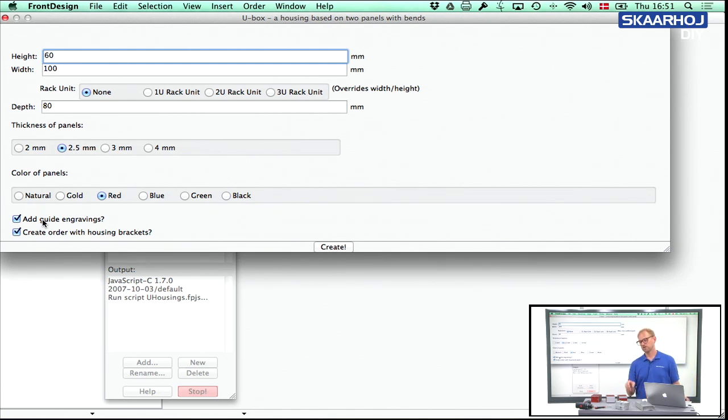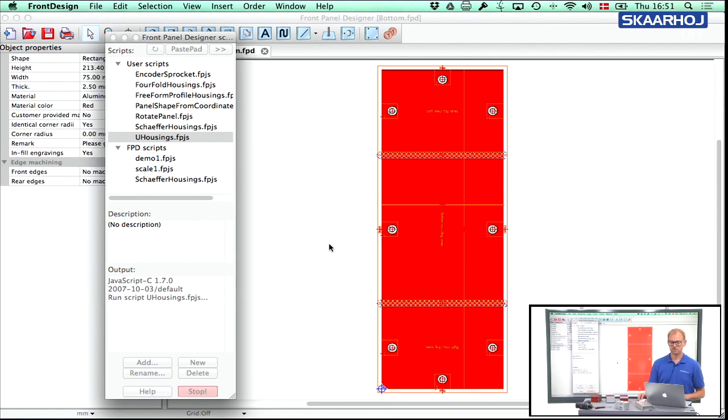And let's just keep the guide engravings. You should remember the guide engravings from all the other videos demonstrating these, and they show how useful it can be to see the position of elements on the other side. And that's certainly also true for the U housing box.